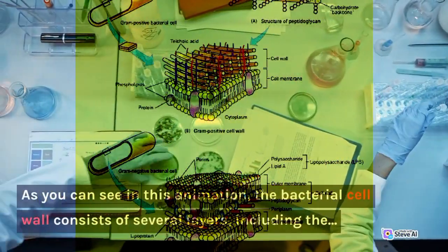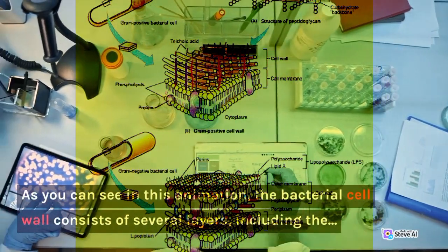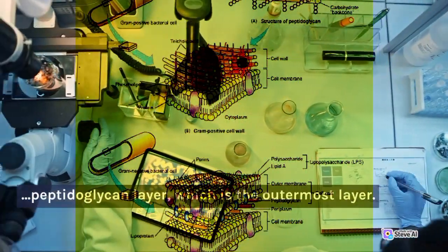As you can see in this animation, the bacterial cell wall consists of several layers, including the peptidoglycan layer, which is the outermost layer.